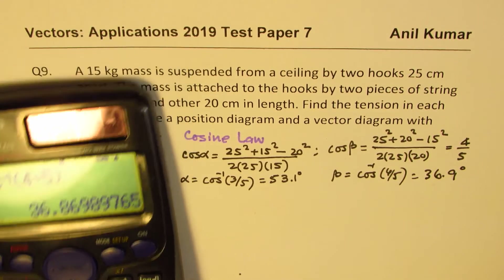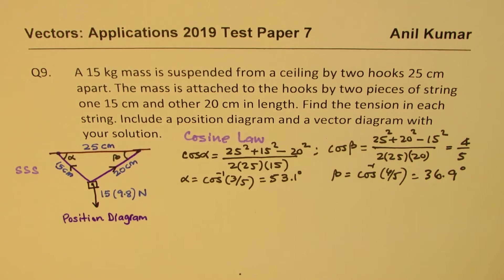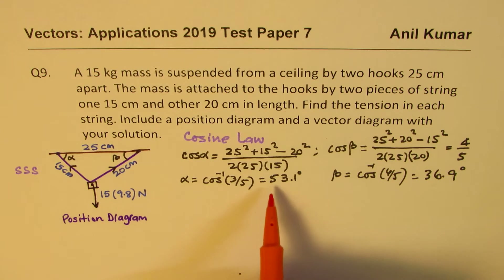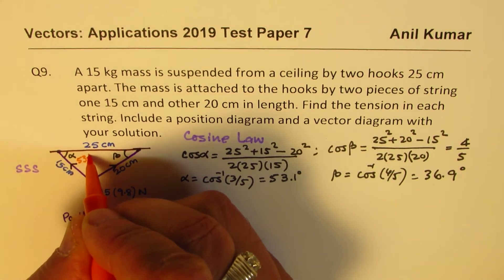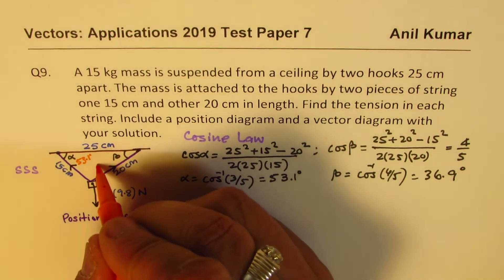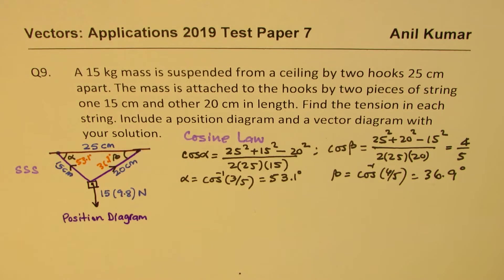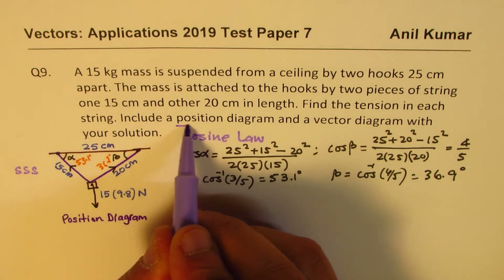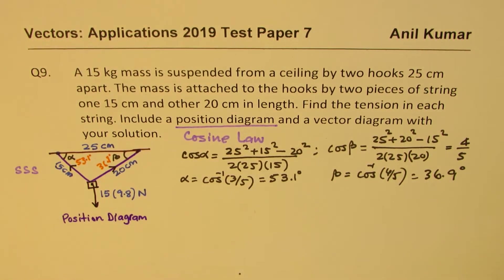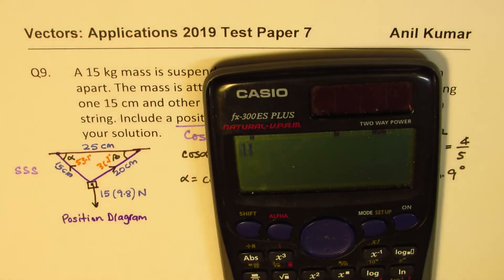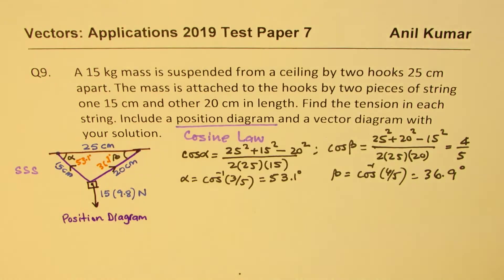So we get α = 53.1° and β = 36.9°. Our position diagram is now complete. Also, multiplying 15 × 9.8 gives us 147, so the weight is 147 Newtons. Now let's work on the vector diagram.